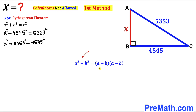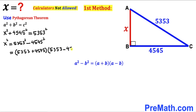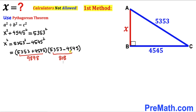We apply the difference-of-squares identity to the right-hand side, labeling a = 5353 and b = 4545. So the right-hand side becomes (5353 + 4545)(5353 − 4545). Adding these numbers gives 9898, and subtracting gives 808. So x² = 9898 × 808.